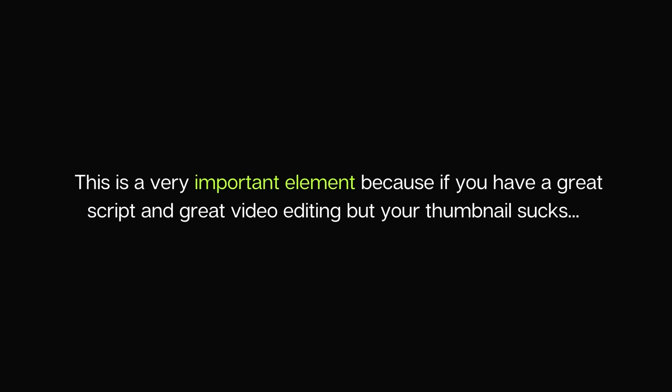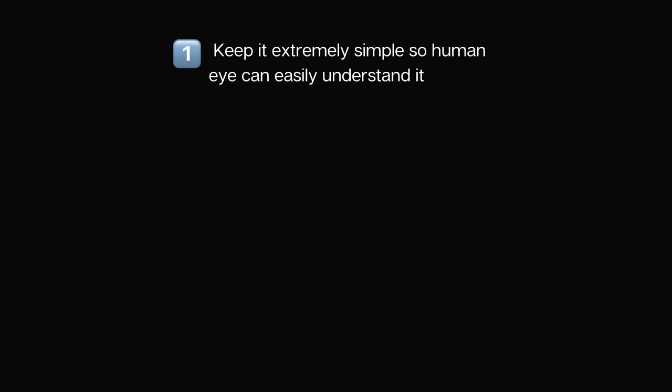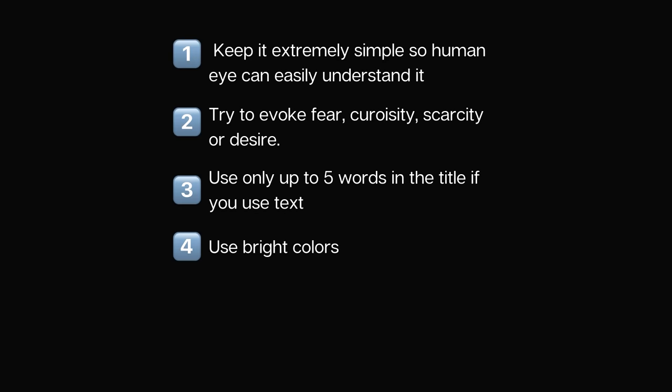Lastly, we have YouTube thumbnails — the small images you see before you decide to click on a video. This is a very important element: if you have a great script and great video editing but your thumbnail sucks, no one will even know your video is great. Five general rules for a high-quality YouTube thumbnail: number one, keep it extremely simple so the human eye can easily understand it; try to evoke fear, curiosity, scarcity, or desire; use only up to five words if you use text; number four, use bright colors; and number five, make sure the image is high quality because a low quality image conveys the entire video is poorly done. You can create thumbnails for free in Canva or outsource to freelancers on Fiverr and Upwork.